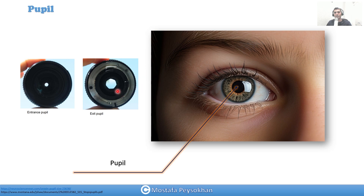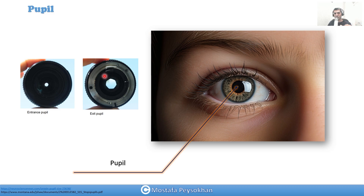Let's look at a lens. When we look at it from the front, you can see a small hole. The size of that hole is the entrance pupil of the optical system. When you flip that lens, you can see from the exit side that the exit pupil is bigger. The physical size of the stop inside the system has a specific size, and we call it the stop. The images of the stop on each side we call entrance pupil or exit pupil.